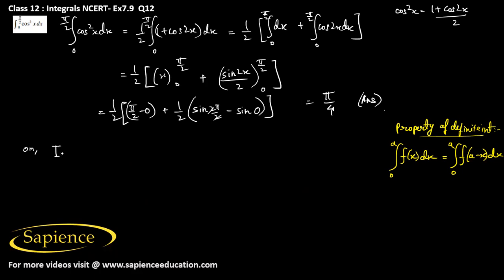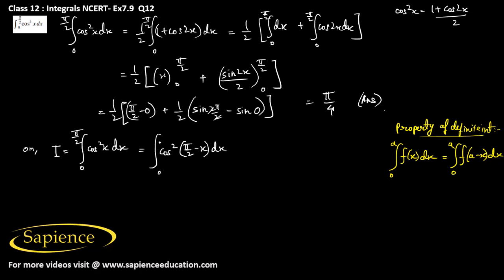Let's call this integral I, so I equals the integral from 0 to π/2 of cos²x dx. Applying the property, this equals the integral from 0 to π/2 of cos²(π/2 − x) dx. Since cos(π/2 − x) = sin(x), this becomes the integral of sin²x dx from 0 to π/2.